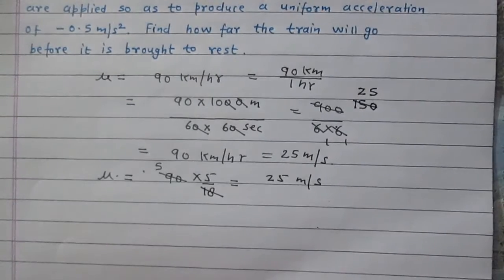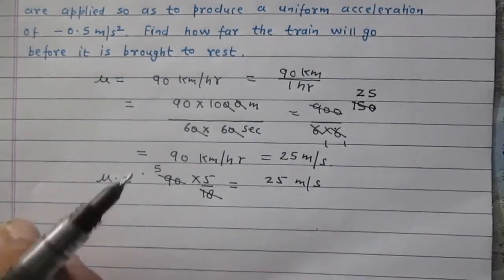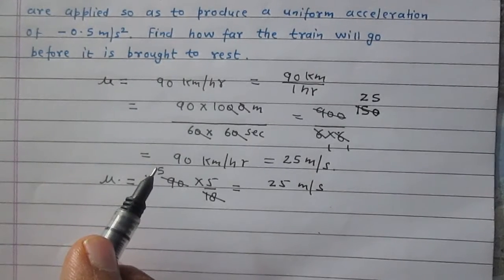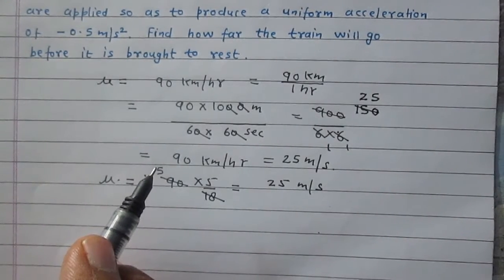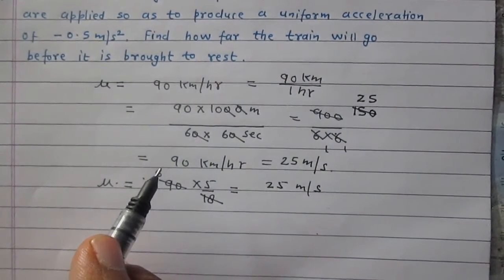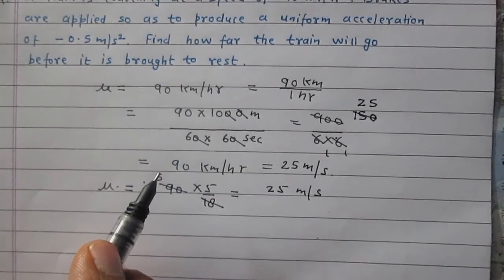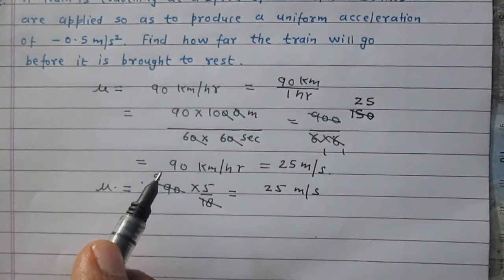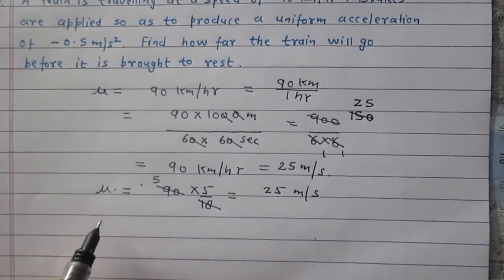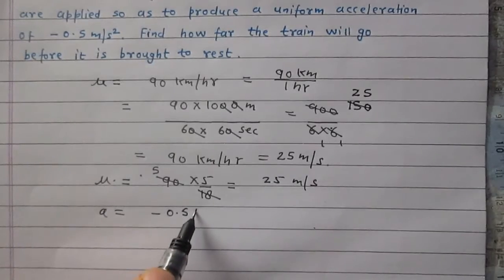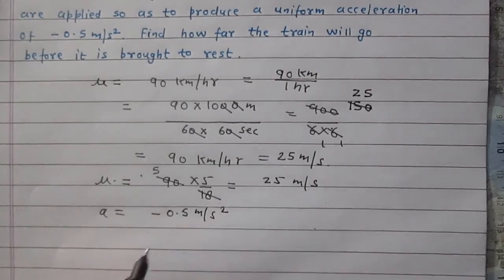Now brakes are applied, so when brakes are applied a retardation will be produced, or you can say a negative acceleration will be produced. A negative acceleration is always responsible for decrease in velocity of the body. So a negative acceleration makes a body decrease its velocity. So acceleration here is -0.5 meter per second square.